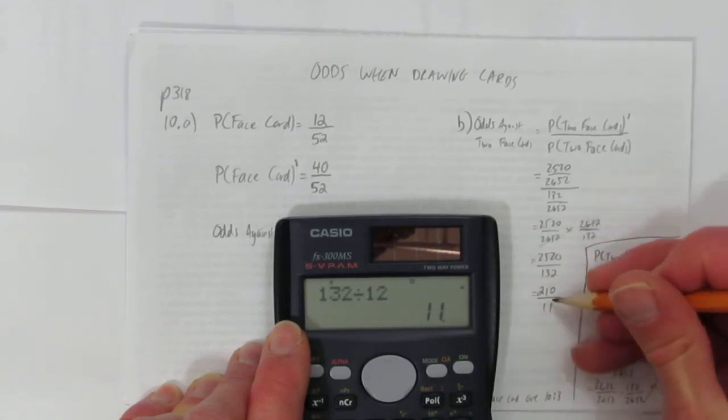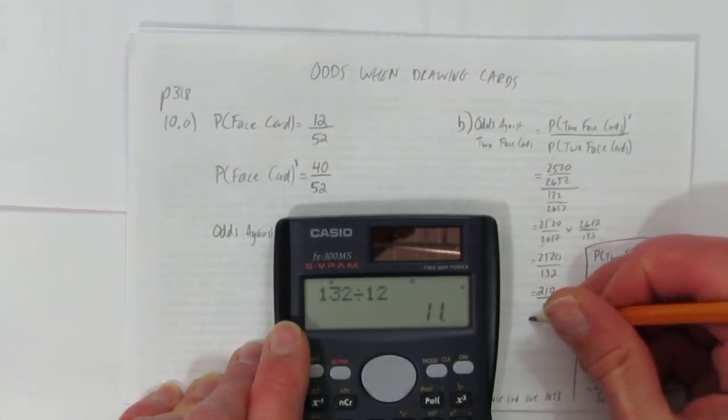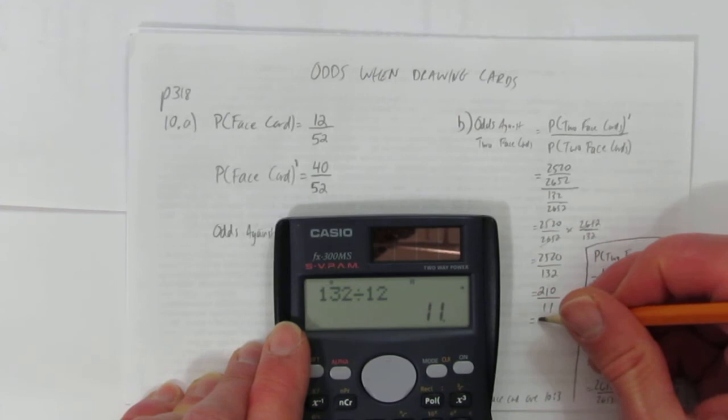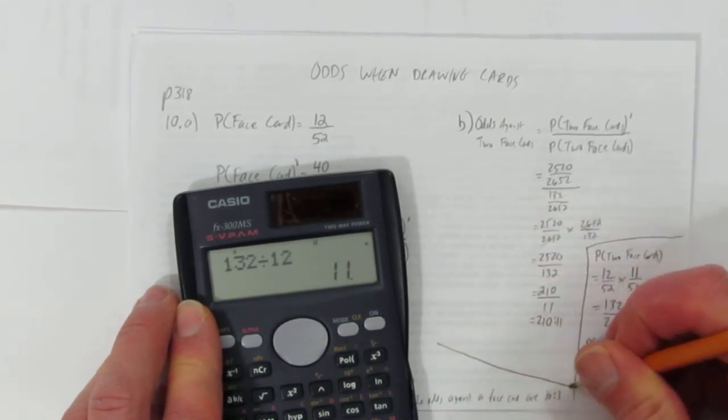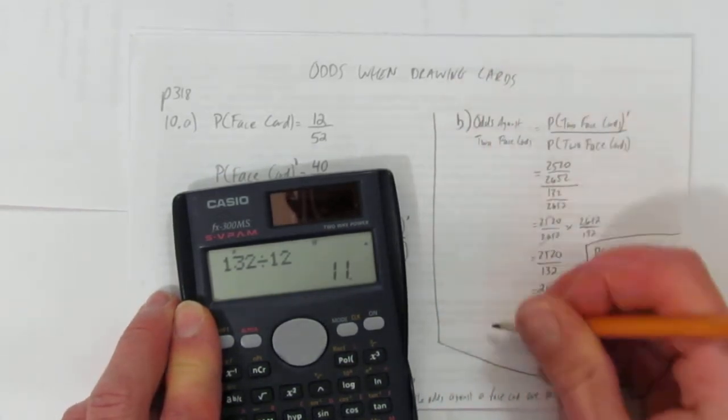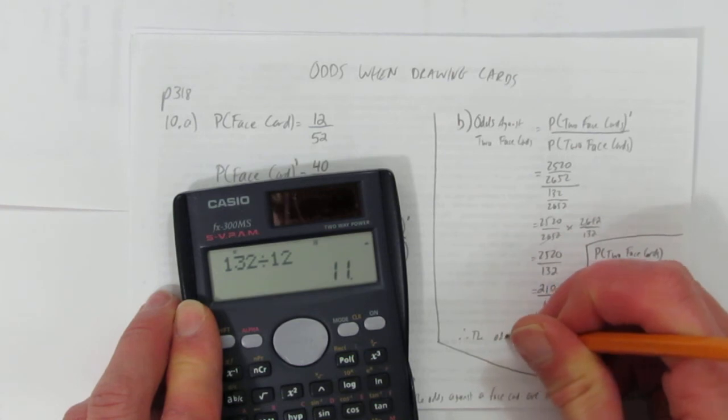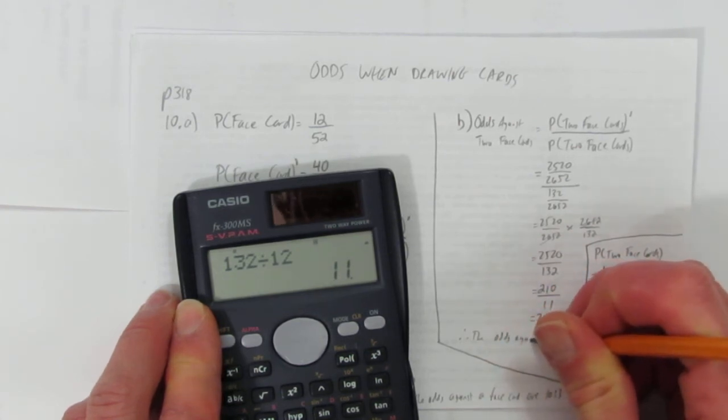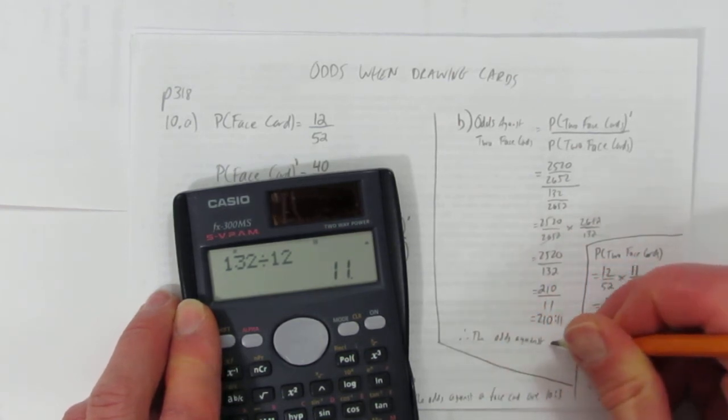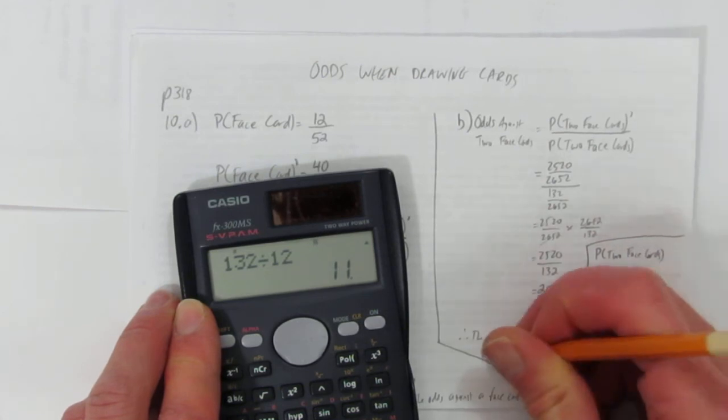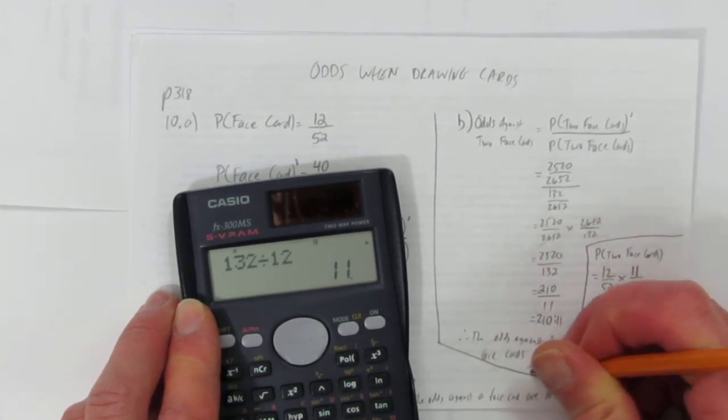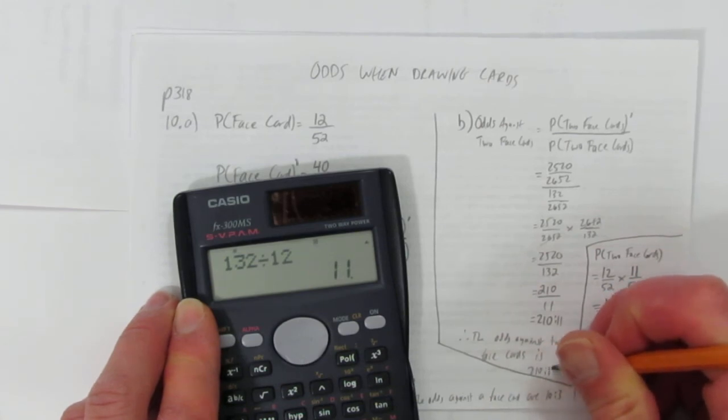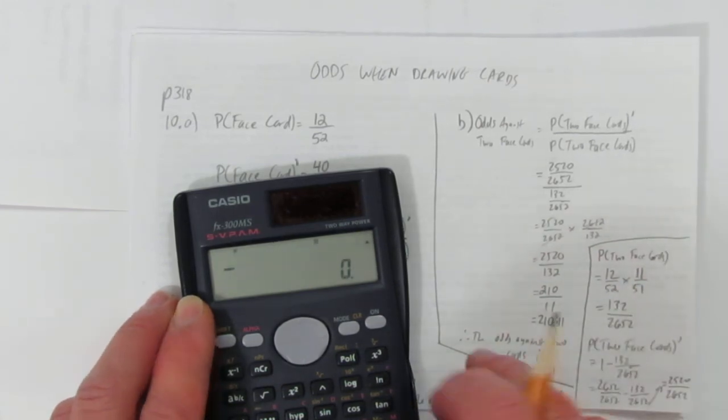And nothing goes into 11 that goes into 210. So I could leave it as a fraction, or I could change it to a ratio. 210 to 11. And so, it's a word problem again. Just separate it from the previous question. Therefore, the odds against, in this situation, of drawing two face cards. The odds against two face cards is 210 to 11. So that's a couple of examples of how to do odds when drawing cards.